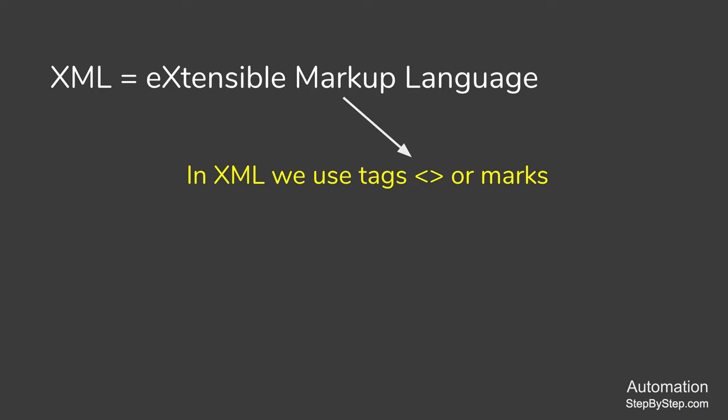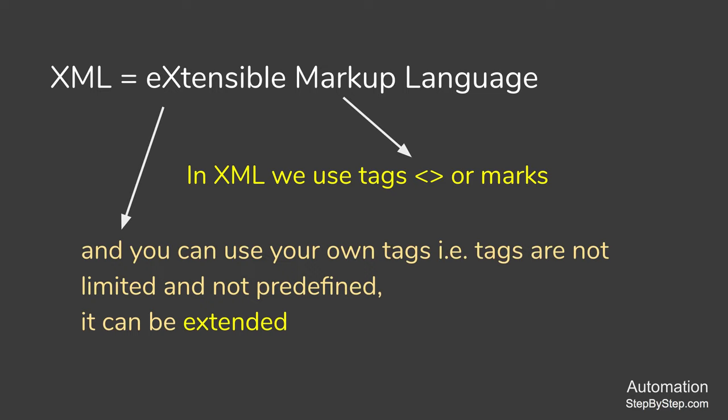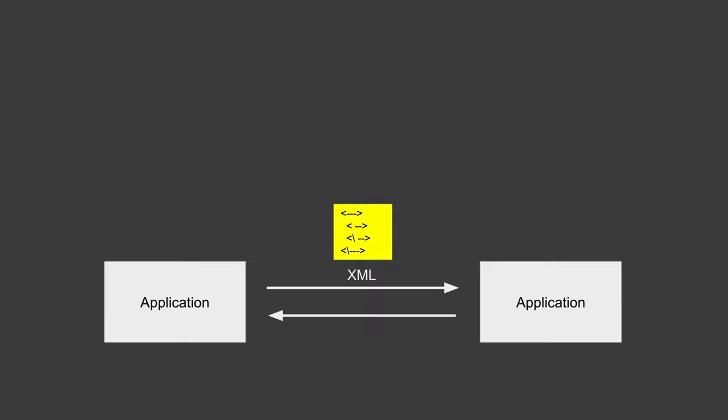XML stands for Extensible Markup Language. It is called markup because we use marks or tags, as we have seen in the example. The tags are not limited and not predefined like in HTML — you can use any tags such as friend list, friends, name, etc. The tags are extensible, which is why it is called Extensible Markup Language.